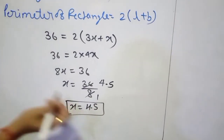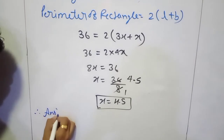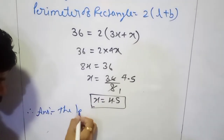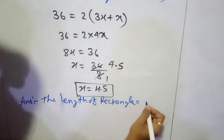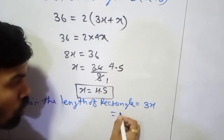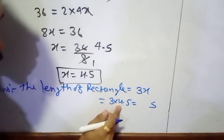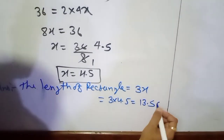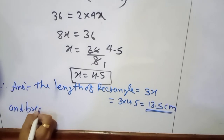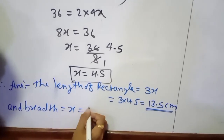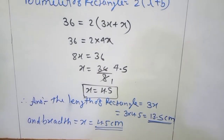That is the value of the common multiple. They are asking for the length and breadth. The length of the rectangle is 3x, which is 3 into 4.5, equal to 13.5 cm. And the breadth is equal to x, which is 4.5 cm. This way we find the length and breadth of the given rectangle.